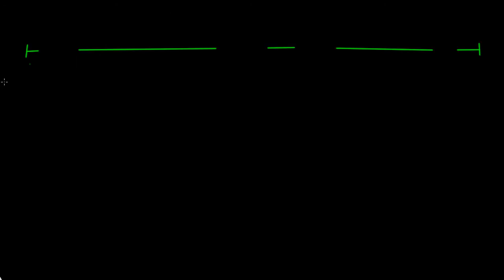Let's do this in green. We have joint a — that's the fixed end a — then member a-b, then joint b, then member b-c, then joint c. So this is a, this is b, this is c, we have a roller at c.